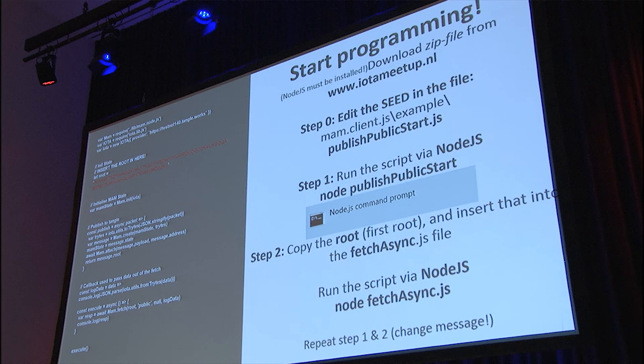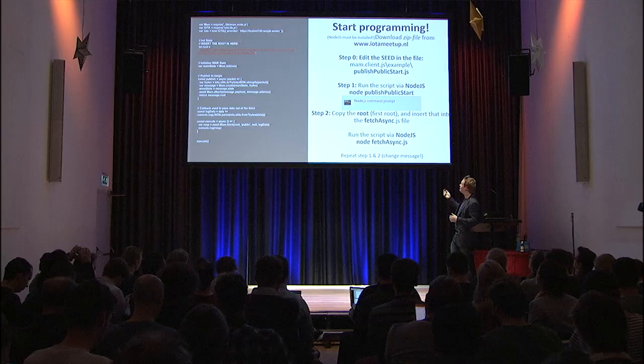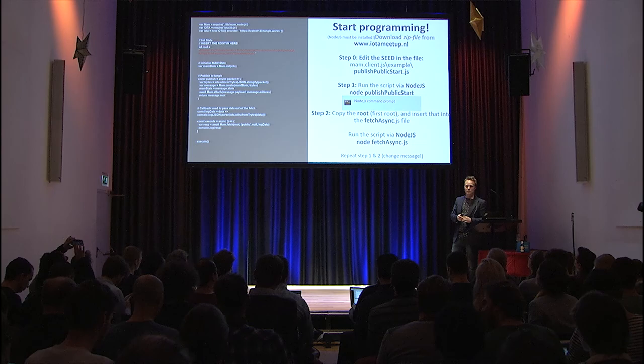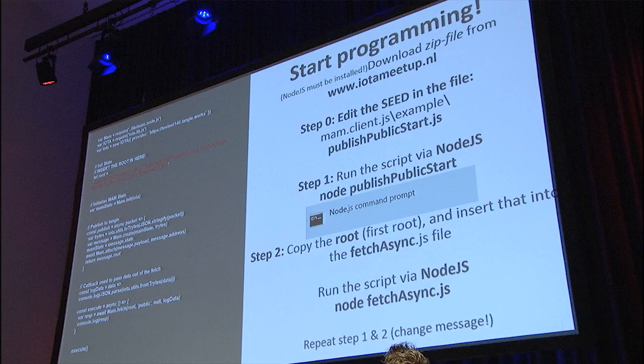With the private mode — not the public one — this gives forward secrecy. This allows you to give root keys to somebody else and they can't see the past, only the future. So you can do this right now: download the code, fire it up. If you start with the second step and leave the root as it is right now and just try to fetch the information — run node fetch-async.js — it will actually fetch the information I put as messages before the meetup, so you can test if it's actually working.